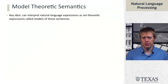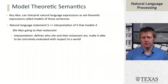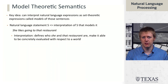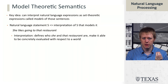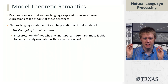We're going to start by talking about model theoretic semantics. The idea is that a natural language expression can be written as a set-theoretic expression, which we call a model. We take a sentence and convert it into what we call an interpretation. For example, the sentence 'she likes going to that restaurant' requires us to figure out who 'she' is and what 'that restaurant' refers to. That allows us to evaluate the statement with respect to a world — whether it is a true statement or not.